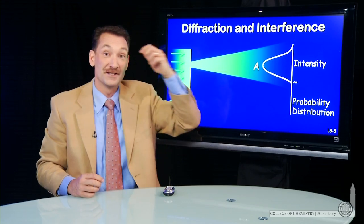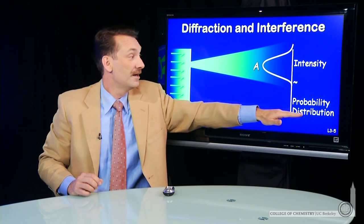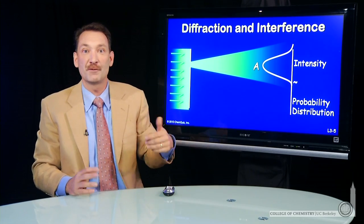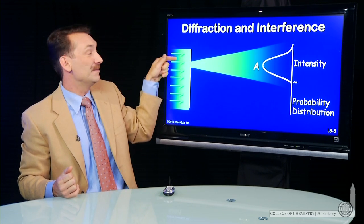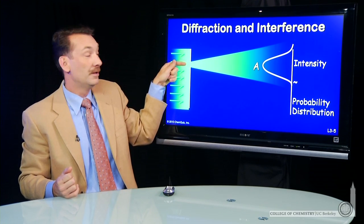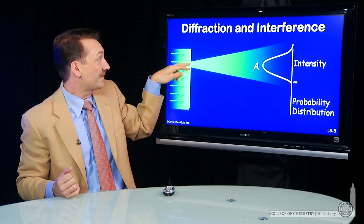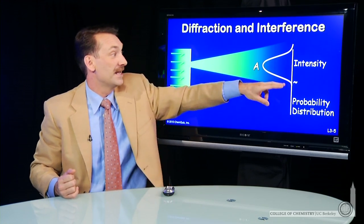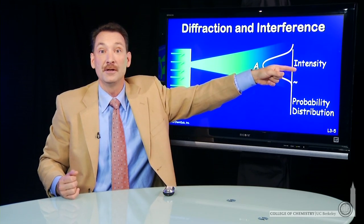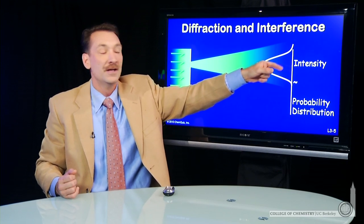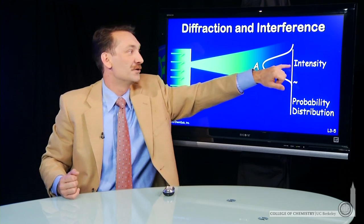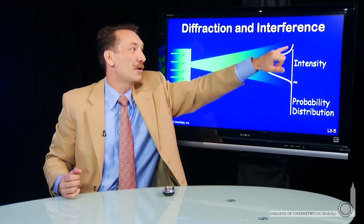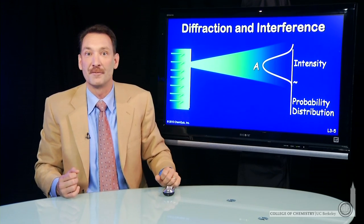So this intensity distribution is just like a probability distribution if it were particles. That is, let's say I shot bullets or BBs or something through a hole. Some of them would tick off the sides here, and they'd spread out, and they'd end out at the fringes. But a lot of them would go right through and hit directly across from the hole. So you'd have a high probability of a particle hitting directly across from the hole and slightly lower probability as you move away from the hole.